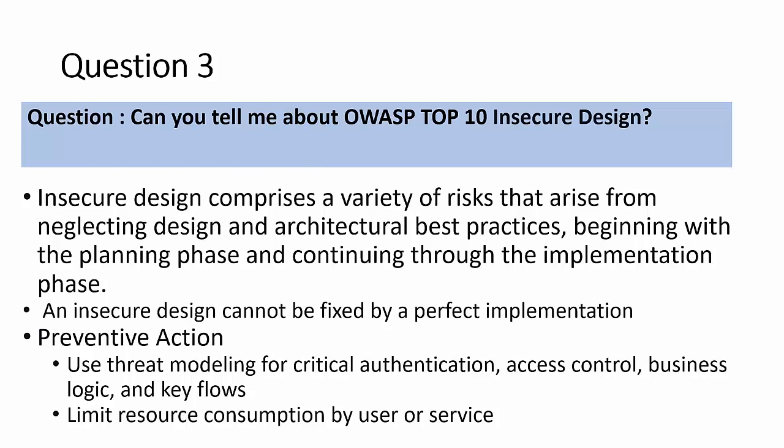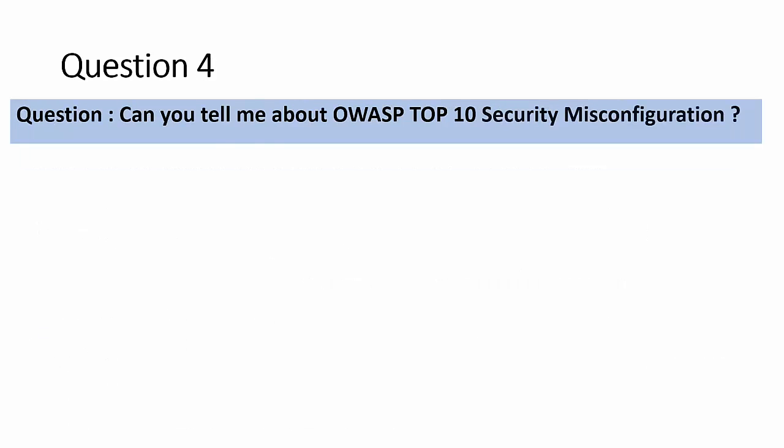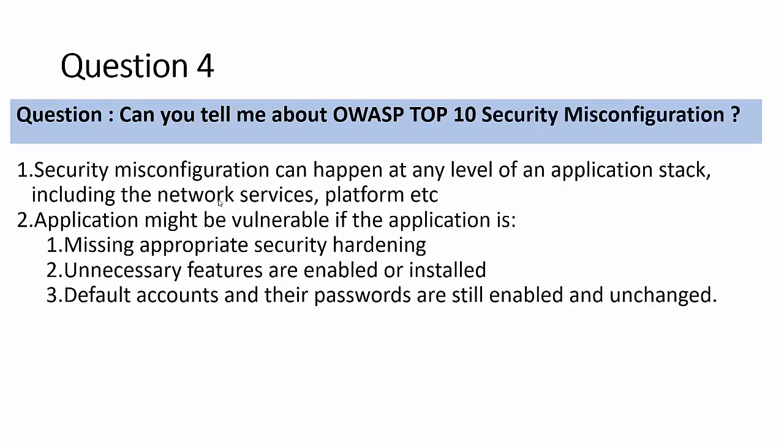The next question: can you tell me about OWASP Top 10 security misconfiguration? There is a difference between insecure design and security misconfiguration. In insecure design, security was never adopted as a principle. In security misconfiguration, security principles may have been adopted but not properly closed — for example, a sample page was created revealing configuration details but never disabled. It's more about implementation negligence.